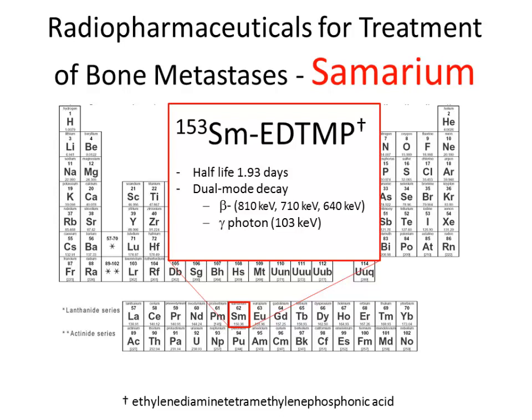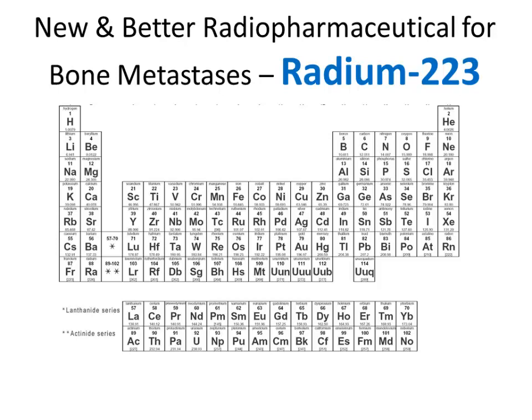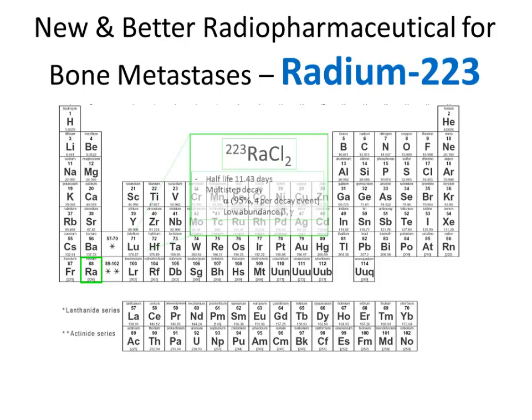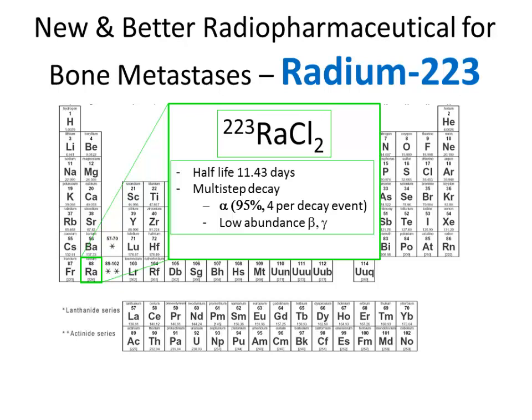The latest agent to come along is further down the alkaline earth column: radium, specifically radium-223. Although most radium isotopes have half-lives of 10,000 years and cause radiation poisoning, this particular isoform has quite favorable characteristics. It has a half-life of 11.43 days and a multi-step decay pathway liberating four alpha particles in the course of that decay scheme. So you not only get one hit of alpha per decay — you get four alpha particle hits for each radium molecule that decays, along with some low-abundance beta particles and gamma rays.